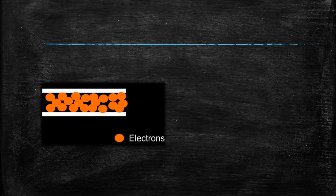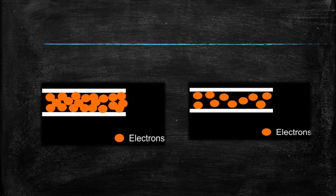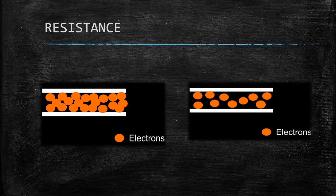There are some materials which have electrons very tightly bounded, and because of that they don't allow the flow of electrons through them — they offer opposition to the flow of electrons. But there are also materials which have electrons loosely bounded and they allow the flow of electrons through them, though they still offer some opposition. That opposition to the flow of electrons offered by a conductor is called resistance.